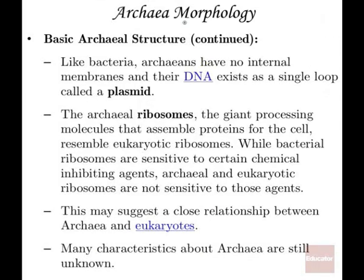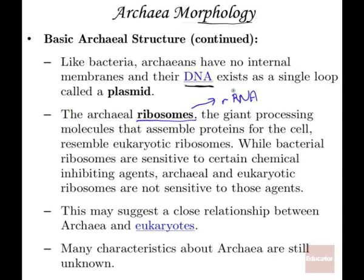In terms of the similarities that archaea have to bacteria: archaea actually has DNA, and their DNA exists as a single loop called a plasmid, just like the bacteria. Archaea also have ribosomes and ribosomal RNA, just like bacteria and eukaryotes. Interestingly, their RNA resembles eukaryotes more so than it resembles bacteria, so there could be some characteristics of the archaea that actually made their way over into eukaryotic cells, suggesting a close relationship between both kingdoms.